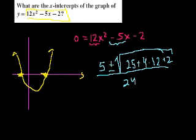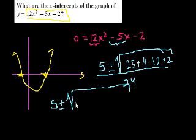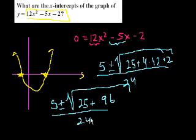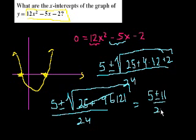So that is equal to 5 plus or minus the square root. Let's see, it was 25 plus 4 times 12 times 2, right? Because that was minus 2, but we had a minus there before. So 8 times 12, so 96. All of that over 24. What's 25 plus 96? It's 121, right? This is 121, which is 11 squared. So this becomes 5 plus or minus 11 over 24.